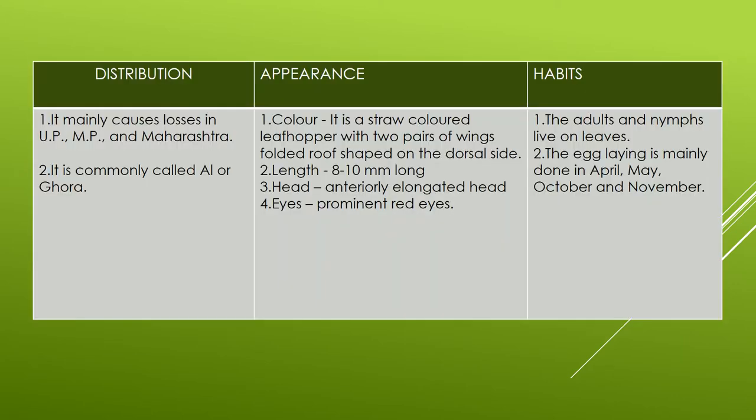About its distribution, it mainly causes loss in UP, MP, and Maharashtra. It is commonly called 'al' or 'ghora'.